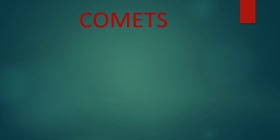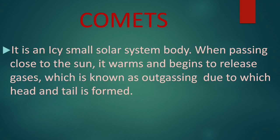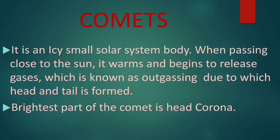Next we will discuss about comets. Comets in Hindi are known as Dhumketu. A comet is an icy small solar system body. When passing close to the sun, it warms and begins to release gases, which is known as outgassing, due to which a head and tail is formed. It is only visible when it travels close to the sun. The brightest part of the comet is the head, or coma.